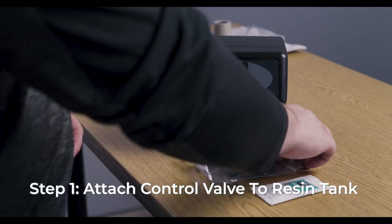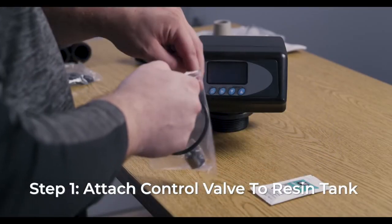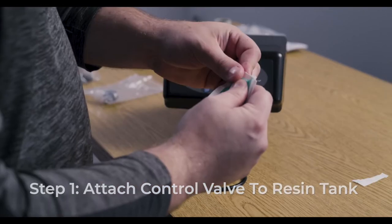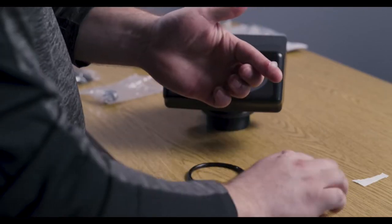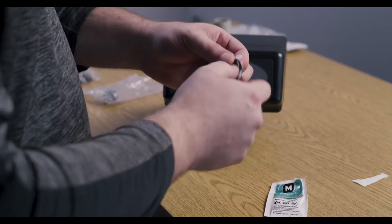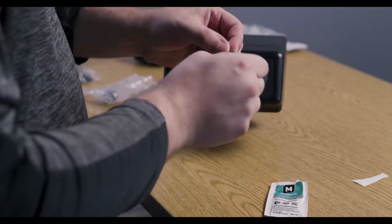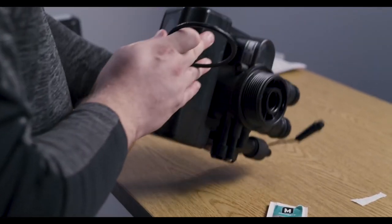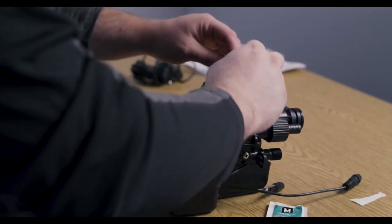To begin the install, locate the system control valve, the packet of food grade silicone lubricant, and the master o-ring. Lightly coat the master o-ring with the lubricant, then insert the o-ring into the bottom of the control valve.